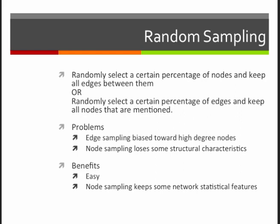Another thing that you can do is random sampling. In this case, you select a certain percentage of nodes to keep, and then you keep all the edges between those nodes, or you randomly select a certain percentage of edges and keep all the nodes that are mentioned. There are problems with both of these.